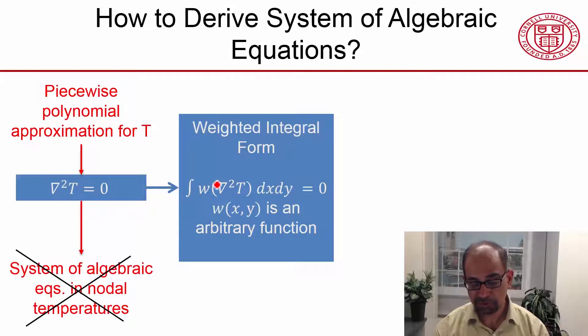And we know from the 1D discussion that we cannot satisfy this for any arbitrary weighting function, because we've assumed a shape for T.